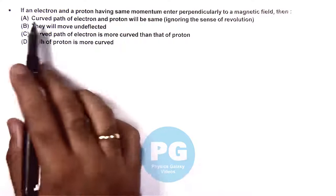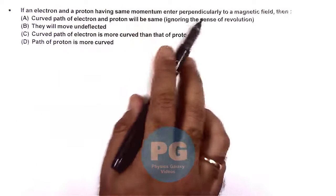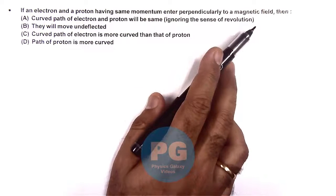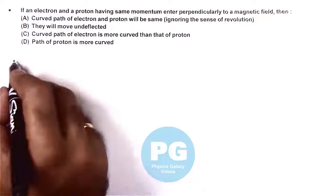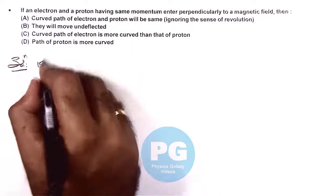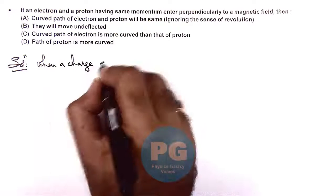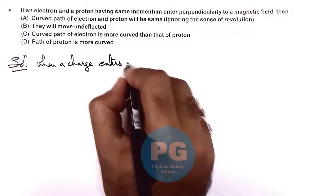In this situation, an electron and a proton having the same momentum enter perpendicularly to a magnetic field. Then we need to check which of the four options is correct. Here we know when a charge enters a magnetic field...